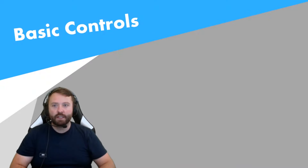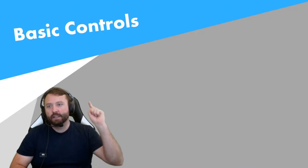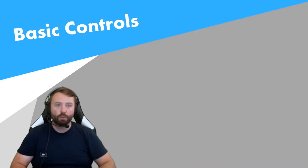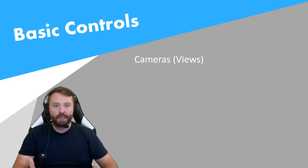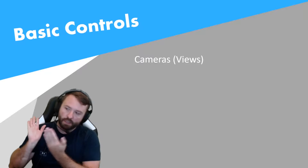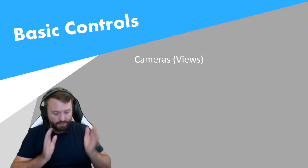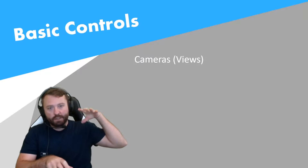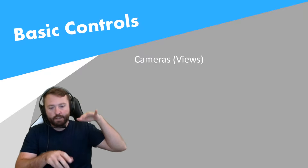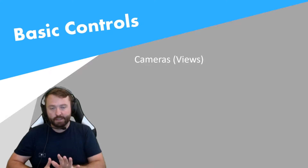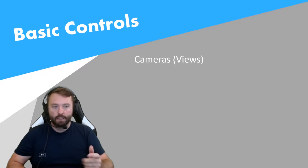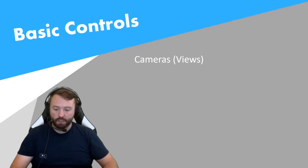What's up guys, Capitan Clint here, and this is basic controls for Microsoft Flight Simulator 2020. The first thing we'll talk about is cameras — your views, being able to look left, right, at the panels, getting outside of the airplane so you can view it from the outside. That's very helpful especially if you're new. Being inside the cockpit, all those camera views, we'll talk about.